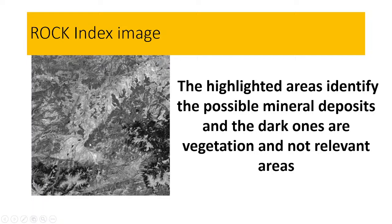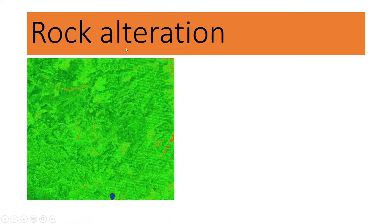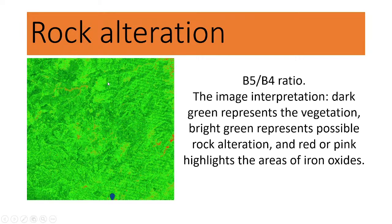When you apply the rock index formula, we can highlight mineral deposition. For rock alteration, we apply the band ratio B5/B4. The image interpretation: dark green represents vegetation, bright green represents possible rock alteration.